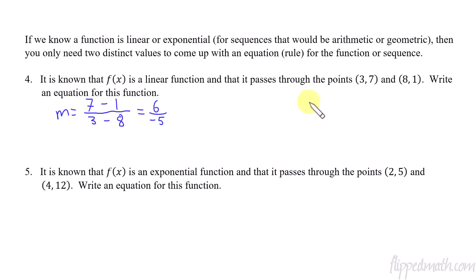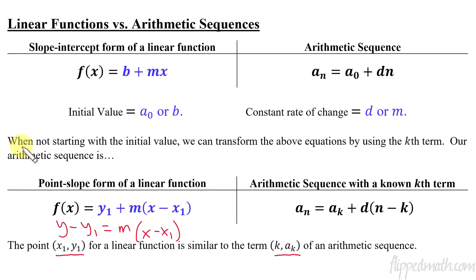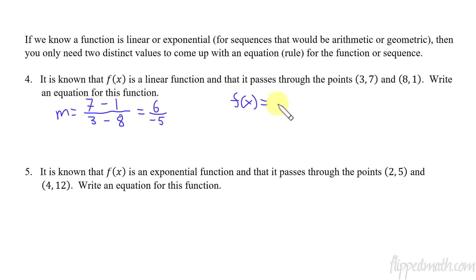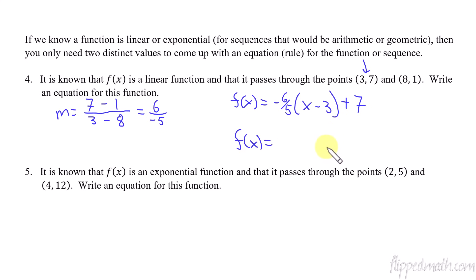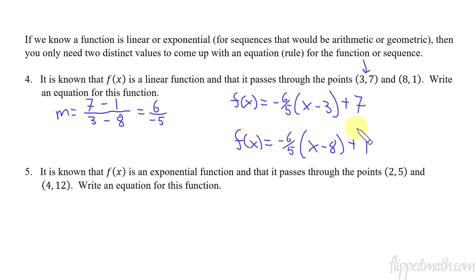Now we can create an equation. Using point-slope form: f(x) equals negative 6/5 times (x minus 3) plus 7. Or using the other coordinate point: f(x) equals negative 6/5 times (x minus 8) plus 1. Either one works on the practice — just put one of them. On an AP exam with multiple choice, they would likely distribute the negative 6/5 and add the 7, then you'd pick the simplified form.